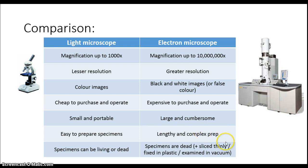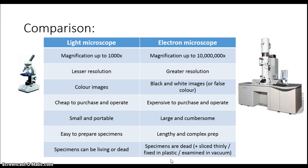The preparation can involve spraying with heavy metals, slicing the specimen very thinly, fixing it in plastic, as well as examining in a vacuum — so all specimens are very dead. You cannot examine living specimens in an electron microscope at all. Just a brief summary of the two types of microscopy available to us in biology.